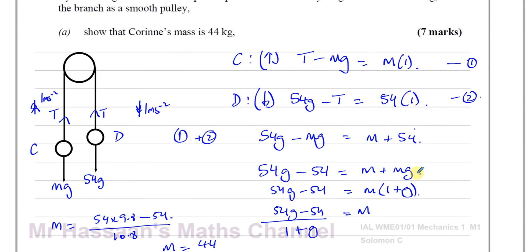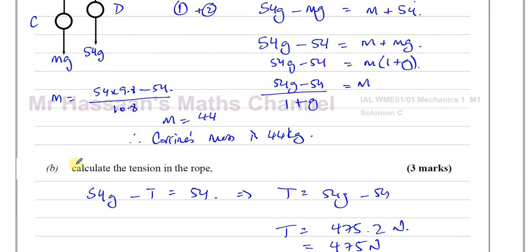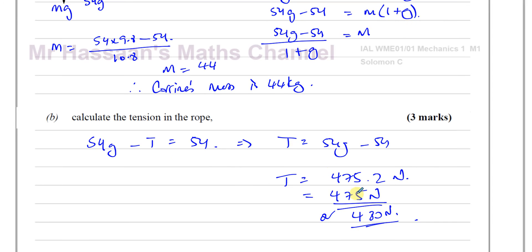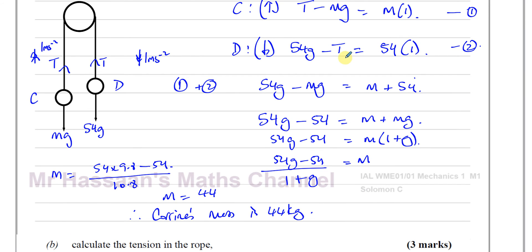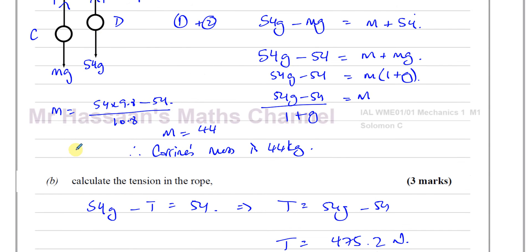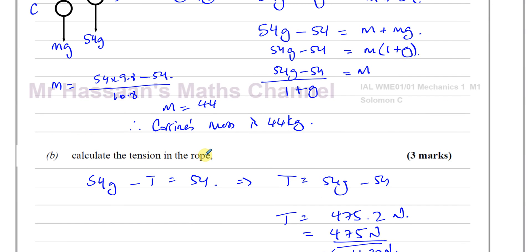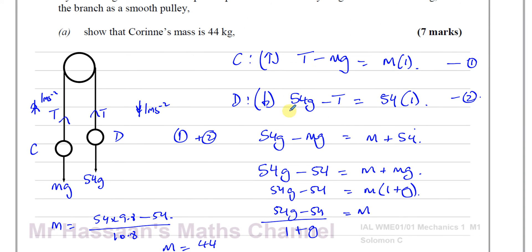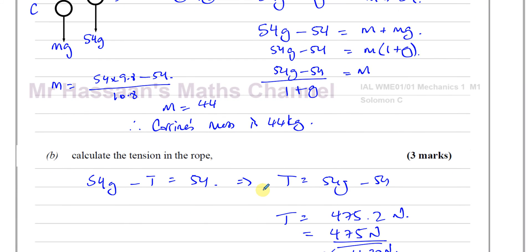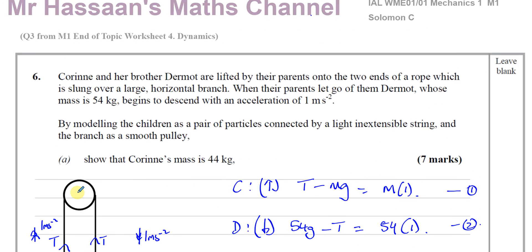As I said, I would have myself found what T was first, substituted T here, and then found what M was rather than doing it this way. But because I saw question part B ask you to find the tension of the rope separately, I've done it this way. And if you did it the other way, absolutely no problem. You can do it either way. You could find the tension first and then find Corinne's mass, and that's like answering A and B in one go. There's absolutely no problem if you did that. You would still get the marks. But you can see from the way the question has been set up that they've intended you to use this method to find M, and then find T. But either way, it's perfectly fine.